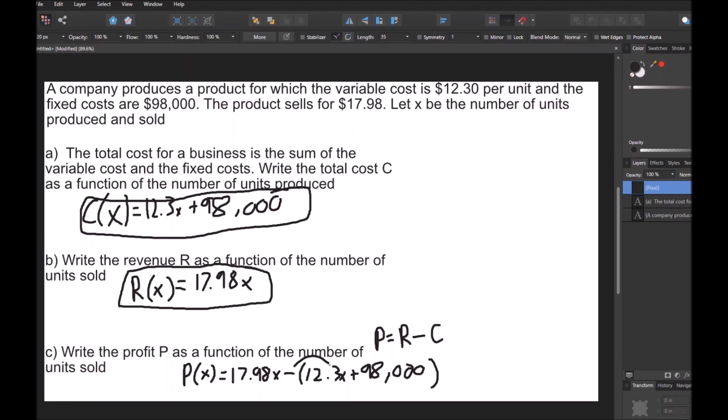And then I'm actually going to distribute this negative sign to both the 12.3X and 98,000 to get 17.98X, which I'll just subtract by 12.3X. So this is going to be 5.68X, 17.98 minus 12.3. This is going to be 5.68X minus 98,000. So there you go. That's going to be your profit function. That's the profit P as the function of the unit sold.